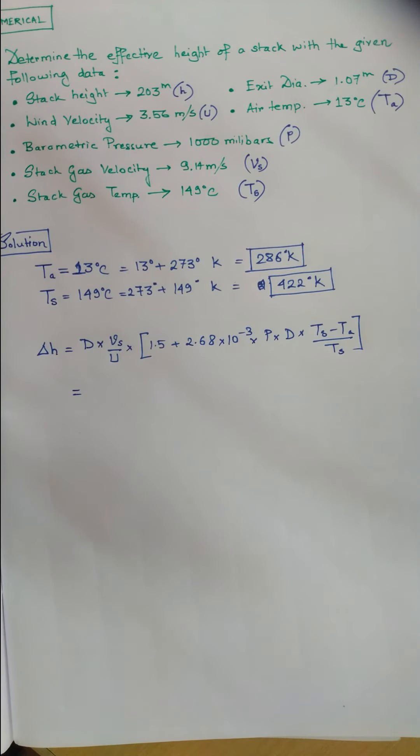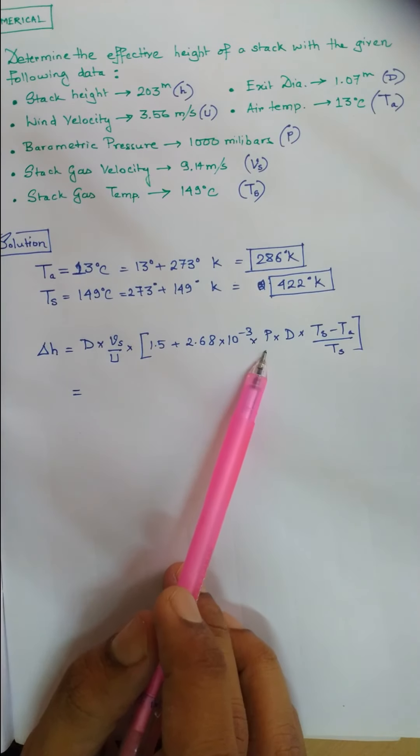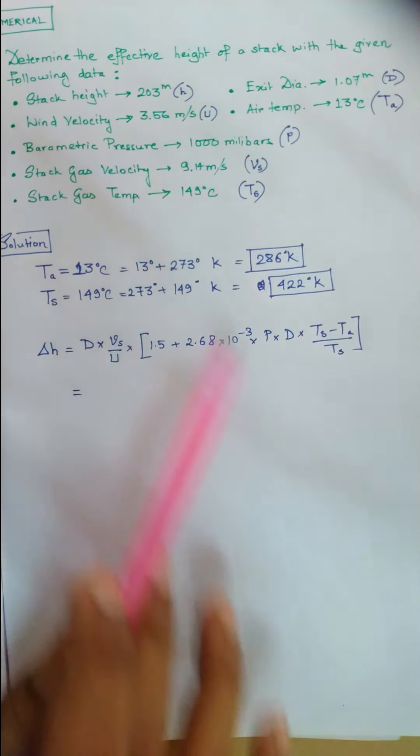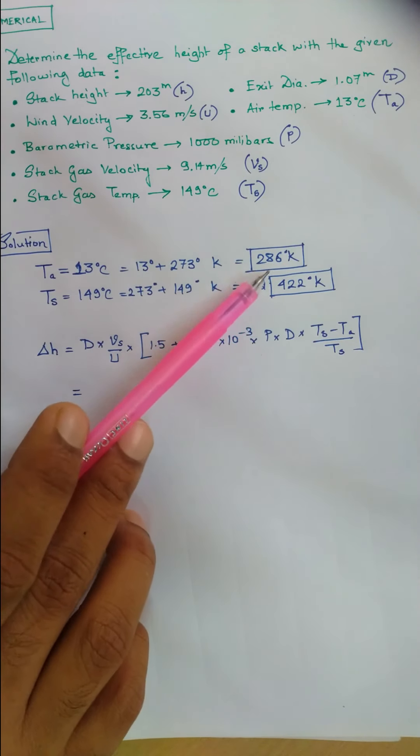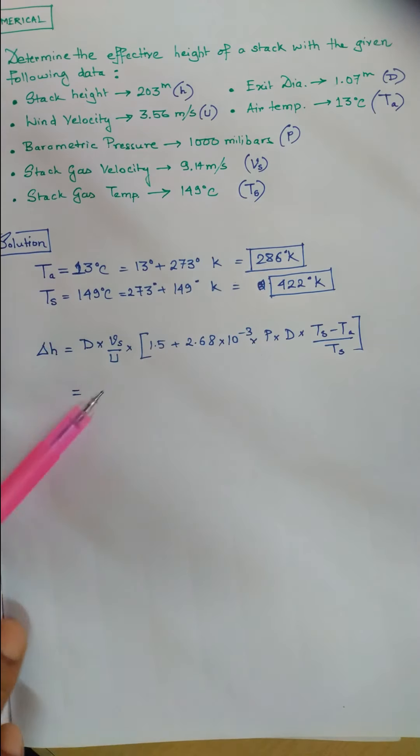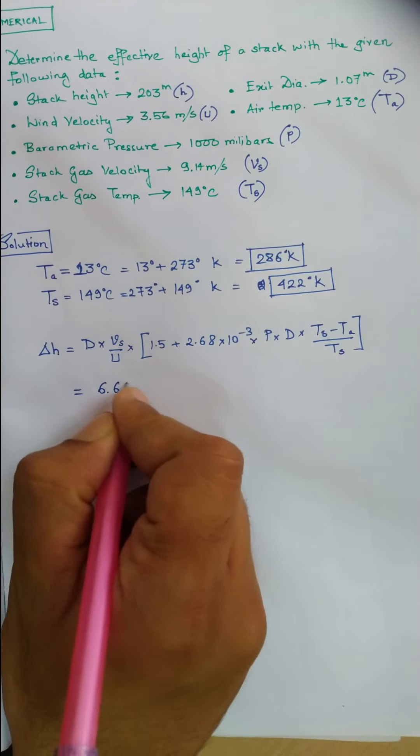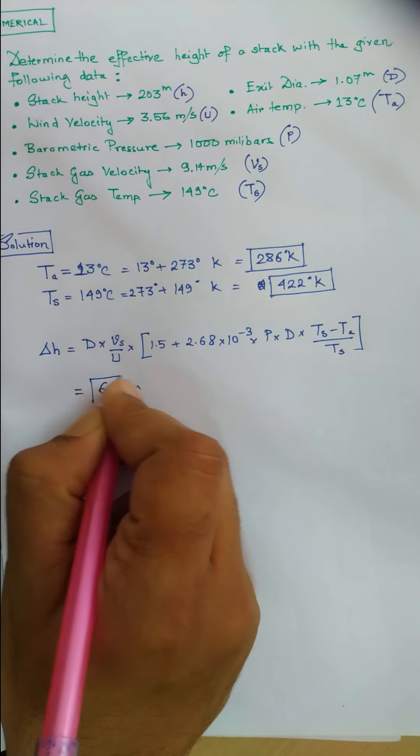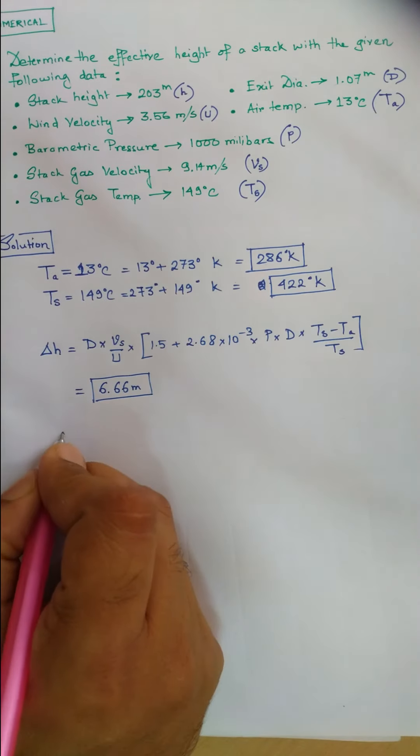I'm not writing everything because p is in millibars and everything is in its own units. You just had to convert the temperature units. Put the values directly and you get the result. This result is 6.6 meters. Please tally it; if not, tell me personally.